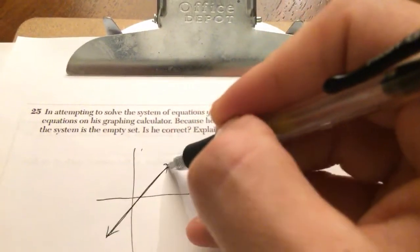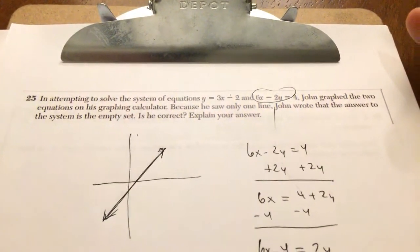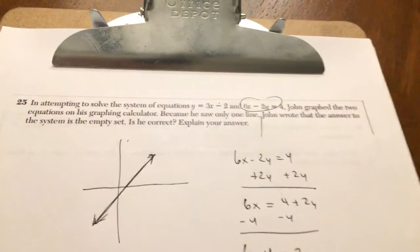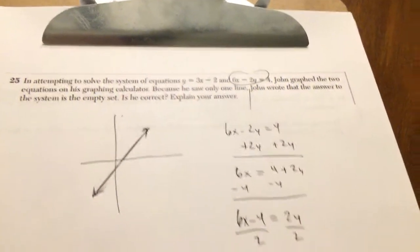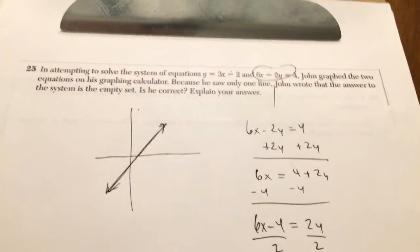So of course, when you graph two separate lines, you're going to have the same line. So the answer to the system, he's saying is the empty set, is he correct? Well, what's happening here is that the solution is an infinite amount of solutions.